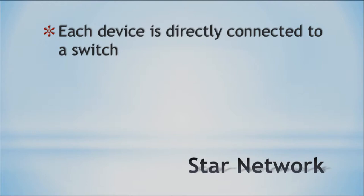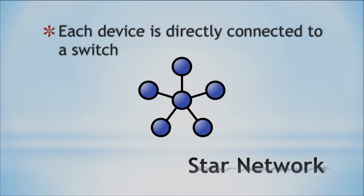Now let's look at a topology that is frequently used in today's networks — the star topology, or star network. Basically, each device is directly connected to a switch. Our nodes are the blue dots, and the center dot is the switch. You can see why we call it a star — it does look like a star, with a center point. The switch becomes the focal point of your network, and everything connects through it, sending and receiving all data. We do use star networks today within our switching technology.